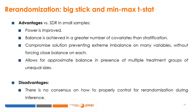Re-randomization methods present several advantages over a single random draw in small samples: power is improved, balance is achieved in a greater number of covariates than stratification, and it provides a compromise preventing extreme imbalance on many variables without forcing close balance on each. It also allows for approximate balance in the presence of multiple treatment groups of unequal sizes. The main disadvantage is that there is no consensus on how to properly control for re-randomization during inference.